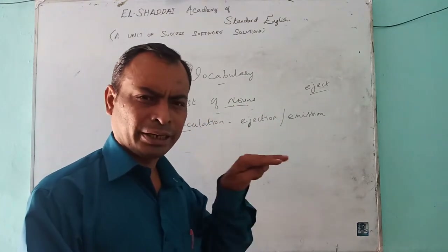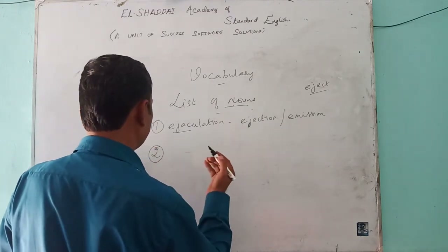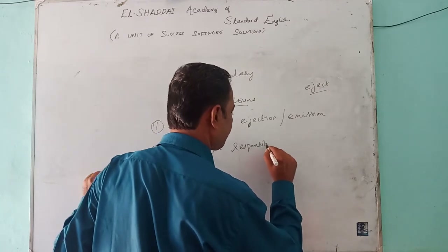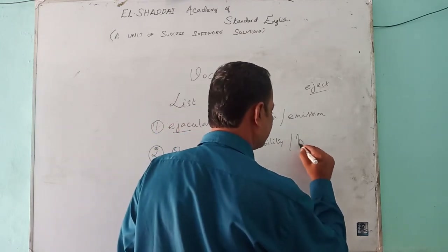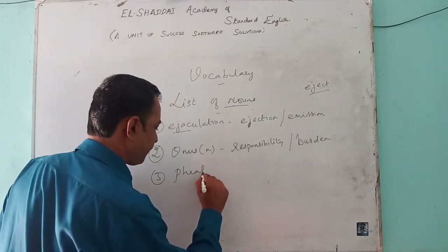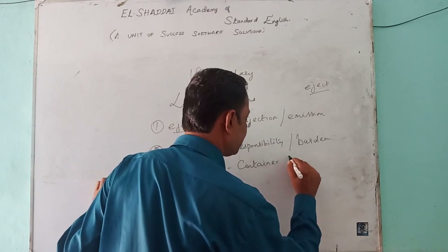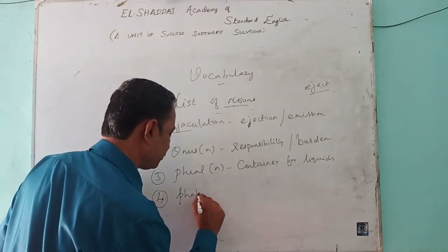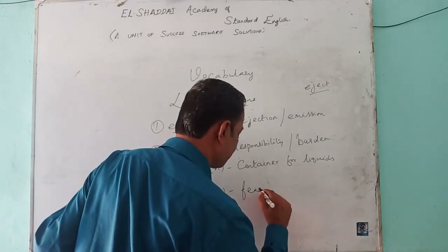The second noun is onus, which means responsibility. Responsibility, or you can say burden. Clear? The third one is a container — a container which consists of liquids. The fourth one is phobia — it's a noun, it's the name of a disease. Phobia means fear or worry.